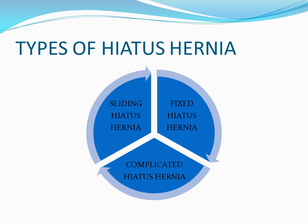The first type is sliding hiatus hernia. This happens when the uppermost part of the stomach, that is the gastroesophageal sphincter, slides in and out of the chest through the diaphragm. These hernias are generally small in nature and produce little or no symptoms. This is the most common type of hiatus hernia.